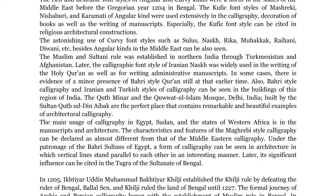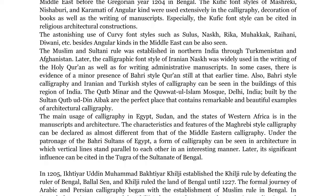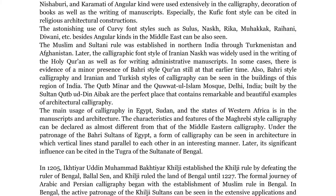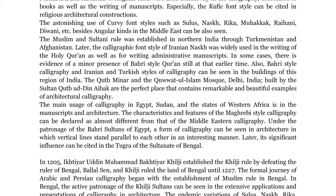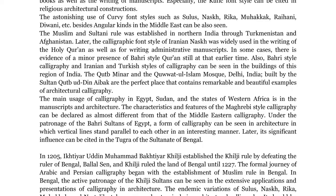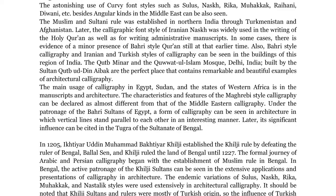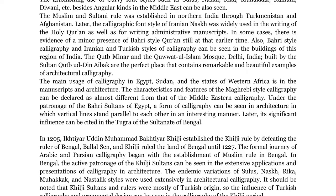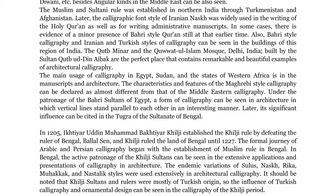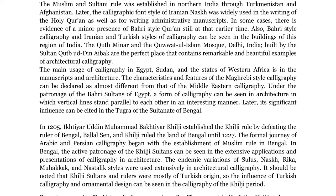The Muslim and Sultani rule was established in northern India through Turkmenistan and Afghanistan. Later, the calligraphic font style of Iranian Nasq was widely used in the writing of the Holy Quran as well as for writing administrative manuscripts. In some cases, there is evidence of a minor presence of Bari-style Quran at that earlier time. Also, Bari-style calligraphy and Iranian and Turkish styles of calligraphy can be seen in the buildings of this region of India. The Qutub Manar and the Kuwat-al-Islam Mosque, Delhi, India, built by Sultan Qutub Uddin Ibak, are the perfect place that contains remarkable and beautiful examples of architectural calligraphy.